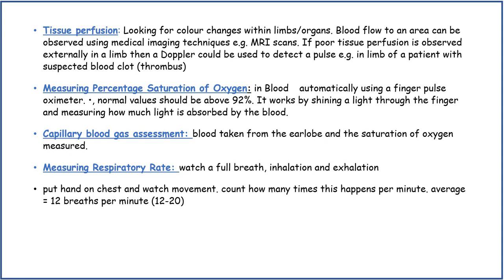Measuring respiratory rate: watch for a full breath — inhalation and exhalation. Put a hand on the chest and watch the movement, then count how many times this happens per minute. The average is about 12 breaths per minute, but the normal range is 12 to 20 breaths per minute.